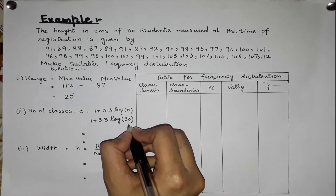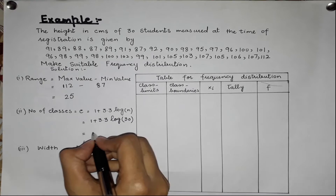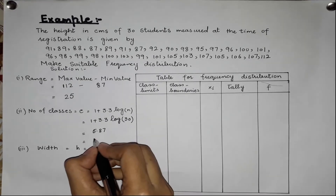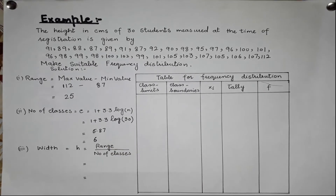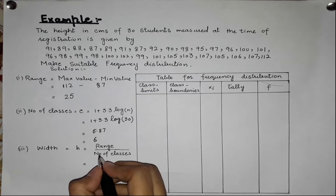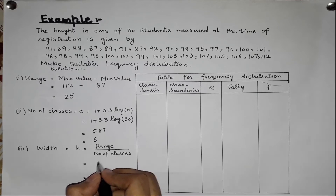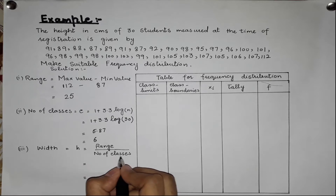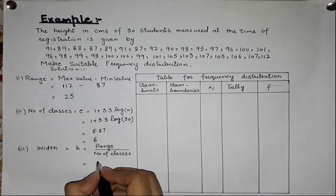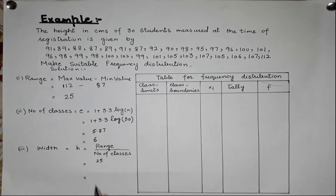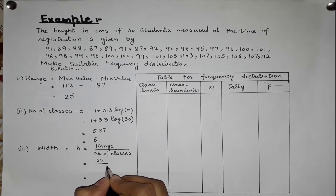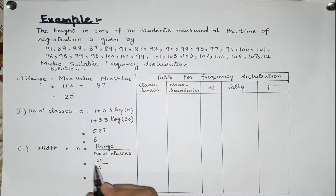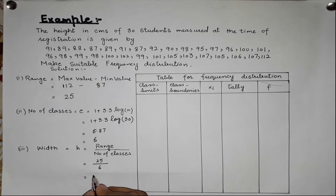When we solve this, we get approximately 5.87, which we round up to 6. So the number of classes is 6. The class width is 25 divided by 6, which gives 4.167, and we round this up to approximately 5.